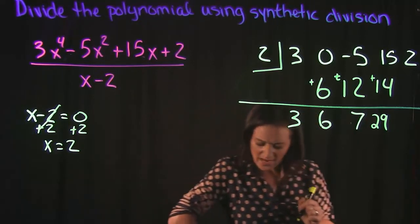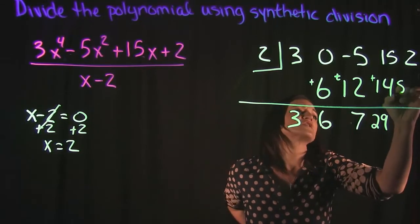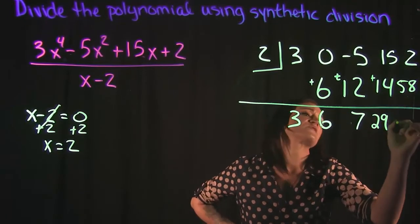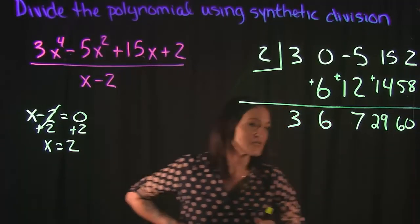Then we do 29 times 2, which is 58. And when we add our final column, we get 2 plus 58, which is 60.